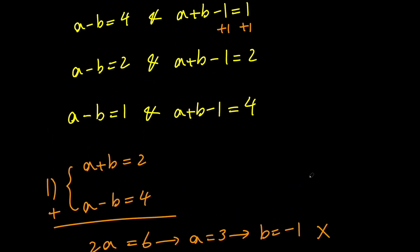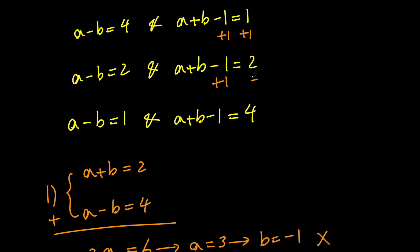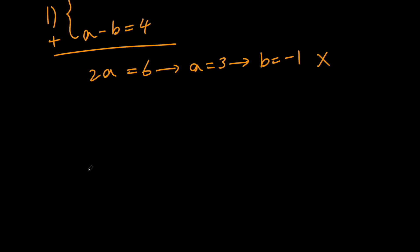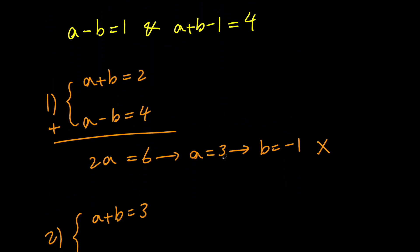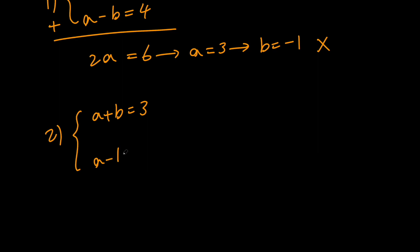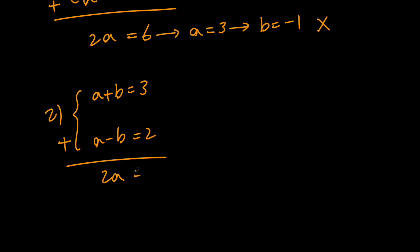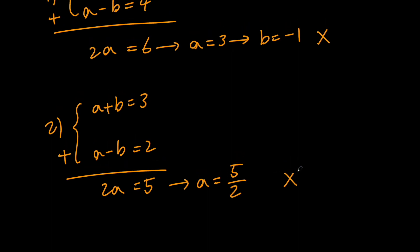In the second case, if we add one to both sides we get a plus b equals 3, and we have a minus b equals 2. Adding these gives 2a equals 5, which means a equals 5 halves. But remember that a and b are integers, and 5 halves is not an integer, therefore this is not valid either.